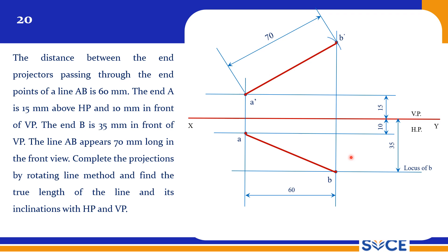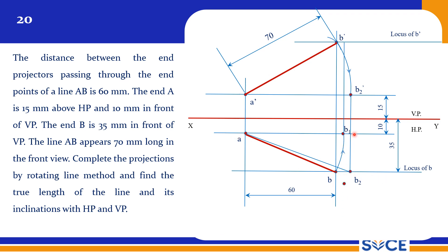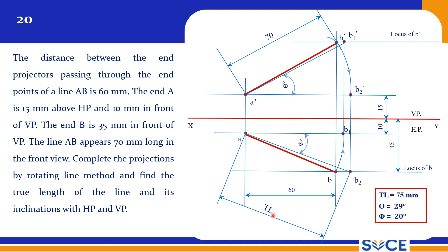Now go in reverse order — rotate to get the true length and true inclinations. The locus of B' is rotated to get B2', and projecting up to the locus of B gives the true length AB2. Rotating and projecting up to the locus of B gives B1'. Measure the true length here. I am getting a true length of 75 mm, theta equal to 29 degrees, and phi equal to 20 degrees. This is the 20th problem.